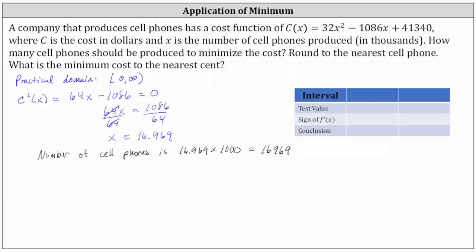Now we need to make sure this is the number of cell phones that minimizes the cost function, not maximizes it, and there are several ways to do this. Notice how we have a quadratic function where the leading coefficient is positive, so the parabola opens up. Therefore, the vertex occurs at x approximately 16.969, and 16,969 cell phones will minimize the cost function. To verify using calculus, we determine the sign of the first derivative to the left and right of 16.969.